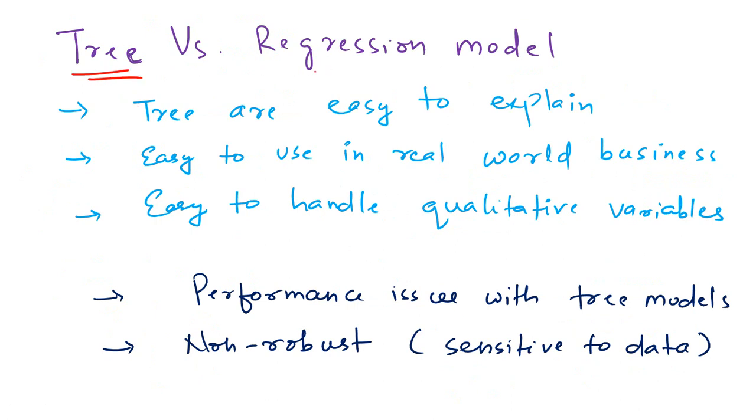There are a few differences between tree and regression model and there are of course pros and cons for using tree based model over regression model. Tree based models are easy to explain because as you have seen in the first slide, there is a graphical representation of how the data has been segregated or there is a partition of your data. So it's easy to explain to people.